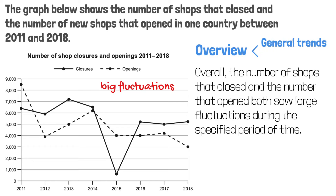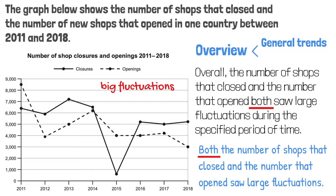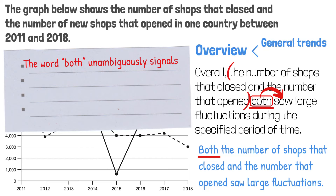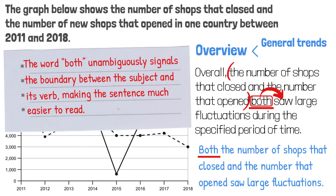You could also use it this way: 'Both the number of shops that closed and the number that opened saw large fluctuations.' But it's actually better to use 'both' to modify the verb 'saw.' This is because here we have a long subject. The word 'both' unambiguously signals the boundary between the subject and its verb, making the sentence much easier to read. Anyway, both versions are correct, although the first one is better.